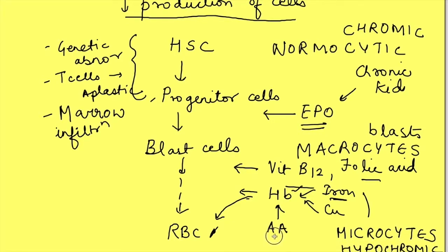Now amino acids are also required for hemoglobin synthesis, so protein deficiency will also lead to decrease in RBC production.